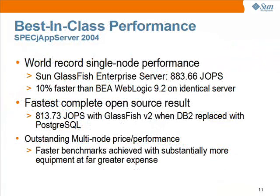Let's talk about performance. Glassfish currently holds the world record single-node benchmark of any application server. We also run the benchmark using all open-source software by replacing DB2 with Postgres, and currently hold the fastest complete open-source solution for a single-node benchmark. While there are faster multi-node benchmarks out there, they all use substantially more hardware, costing significantly more money, to achieve their results. Glassfish continues to provide outstanding price performance.